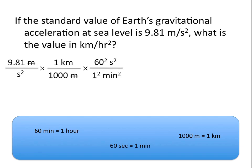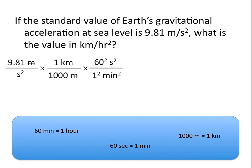What we did here is we just took the conversion factor — 60 seconds is equal to 1 minute — and squared the entire conversion factor. That's the same thing we did before; this is just a more concise way of writing the same thing. And you'll see now that seconds squared on the top is able to cancel with seconds squared on the bottom.